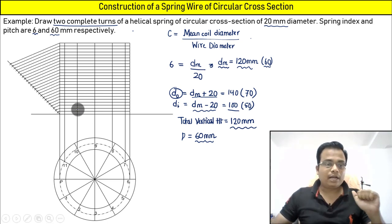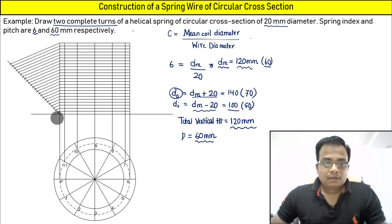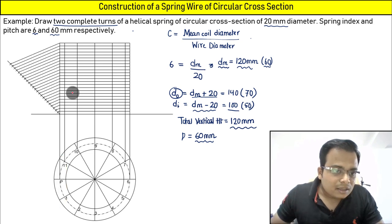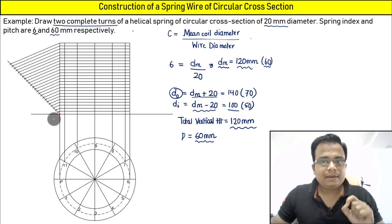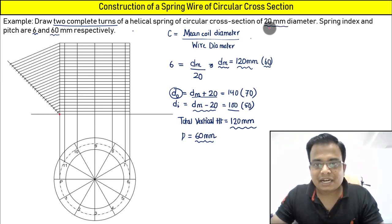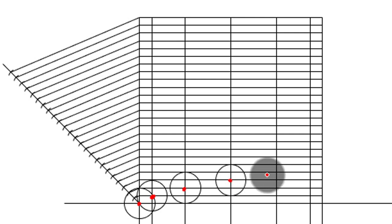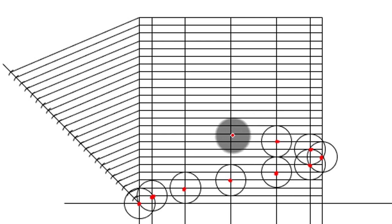Now we start the main construction. The first center is located at the starting point. With 10 mm radius — since the wire diameter is 20 mm — draw a circle. Then move to each successive projected center point and draw a circle with 10 mm radius. Continue for each center in turn, moving across the front view in sequence.